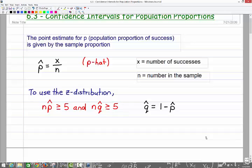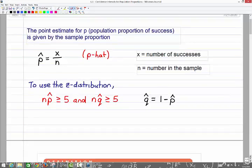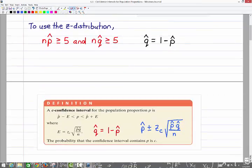Now to be allowed to use the z distribution, it has to satisfy the following criteria. So your p-hat, your sample proportion, times n must be greater than or equal to 5. And then n times q-hat must be greater than or equal to 5, which you see over here to the side is that q-hat is 1 minus p-hat. So those need to be satisfied to be able to use the z distribution. Now that doesn't mean we would use the t distribution. It just means it really would not work very well. So basically it's z distribution or neither.